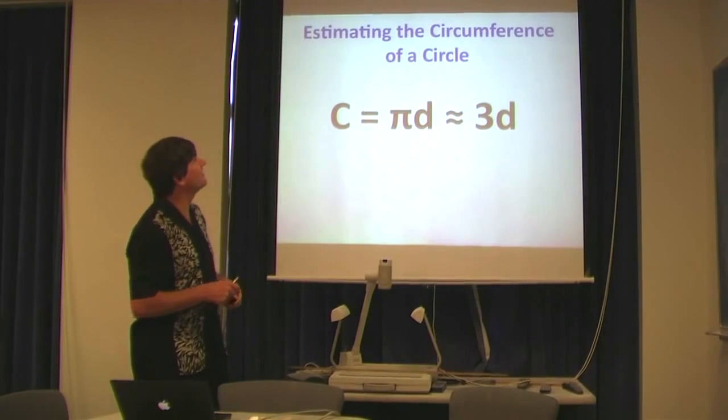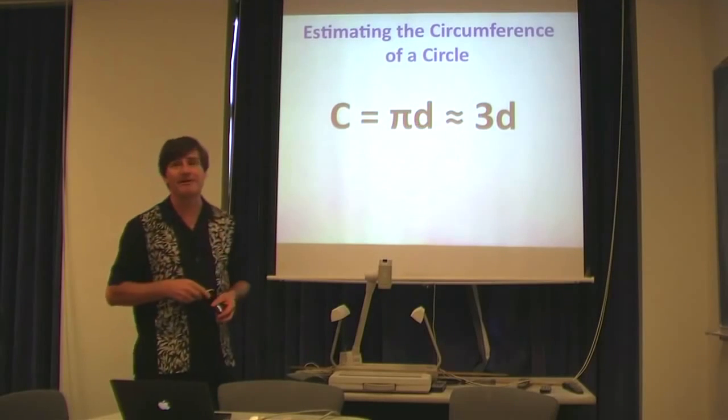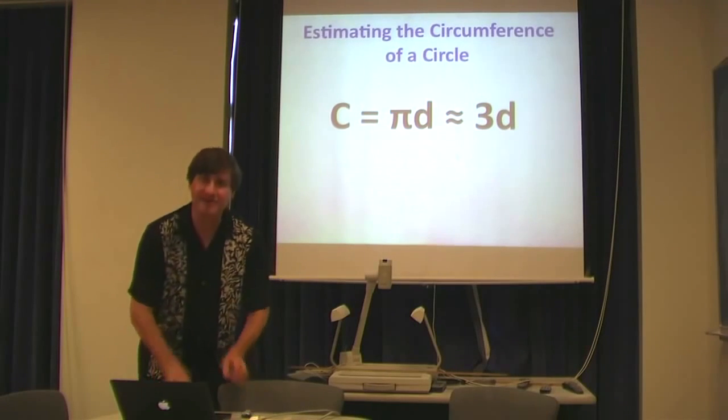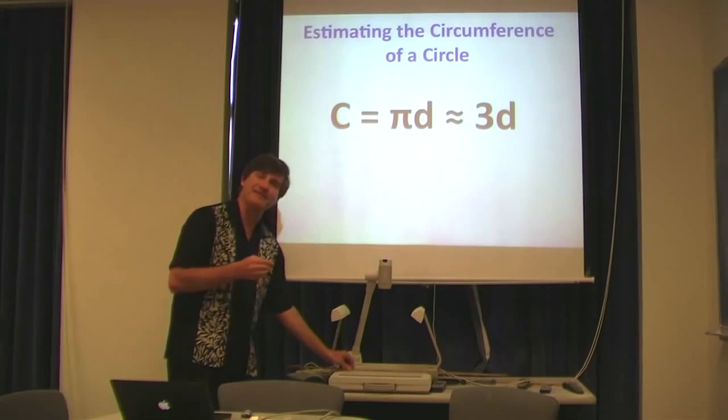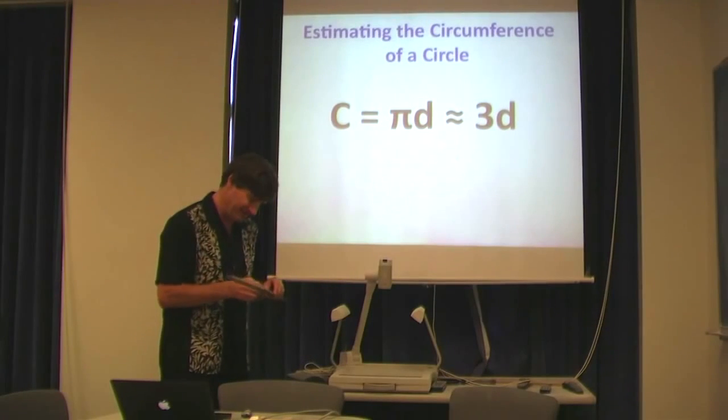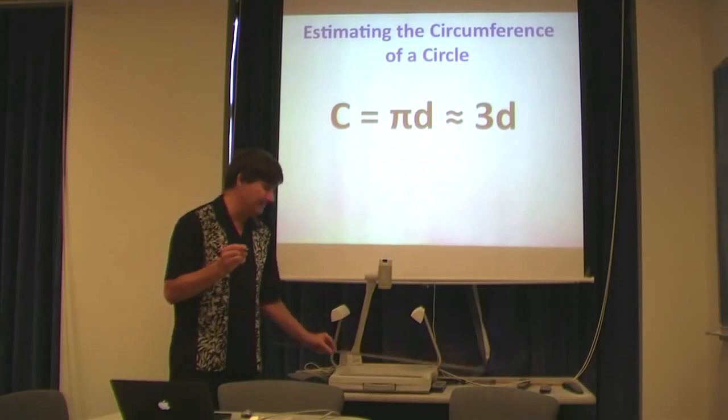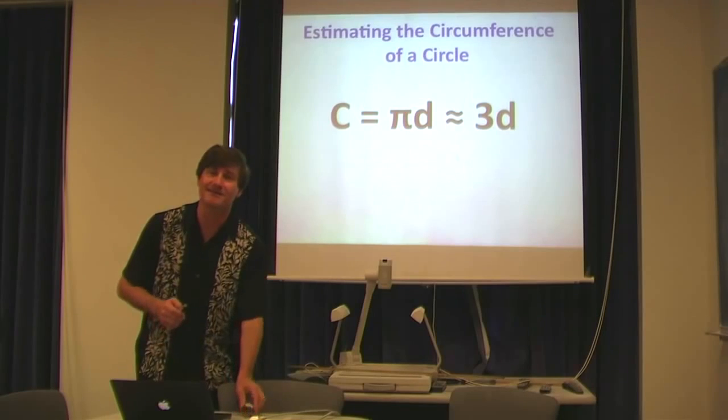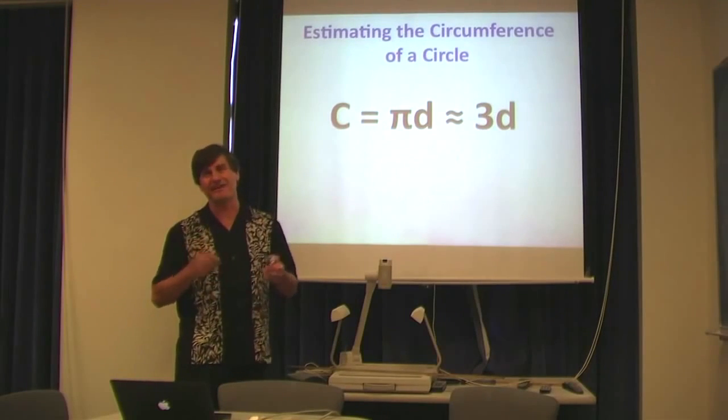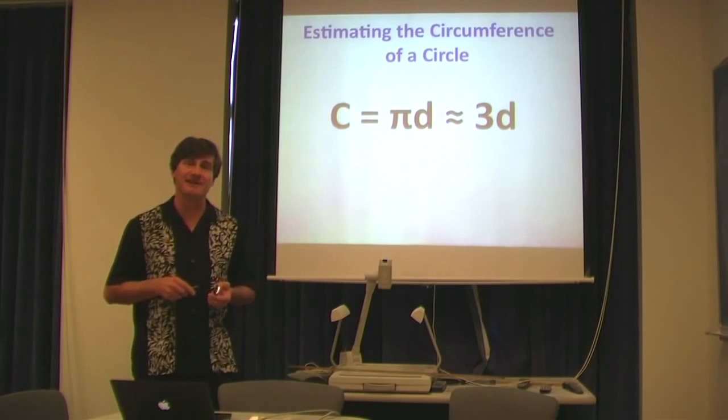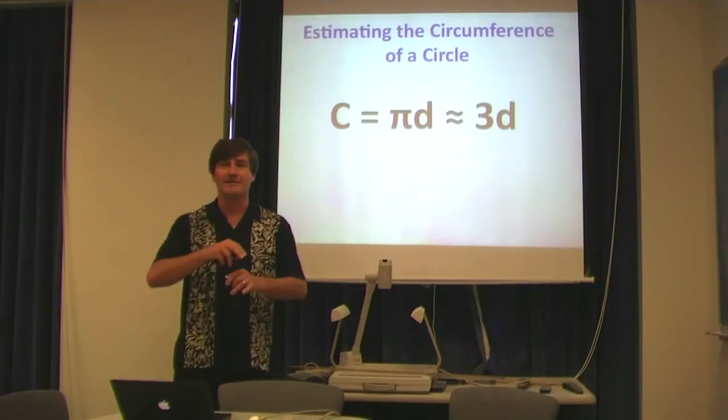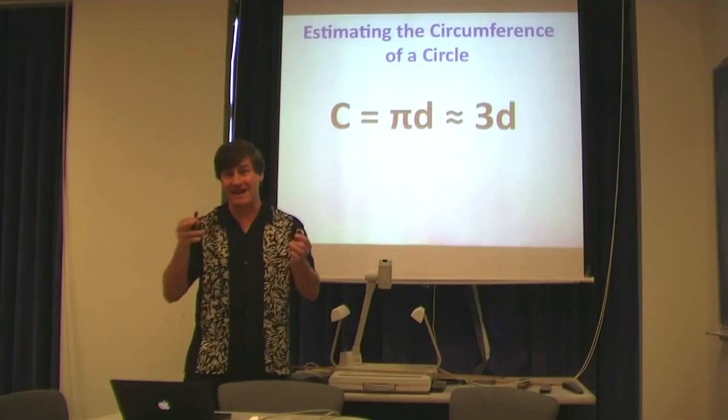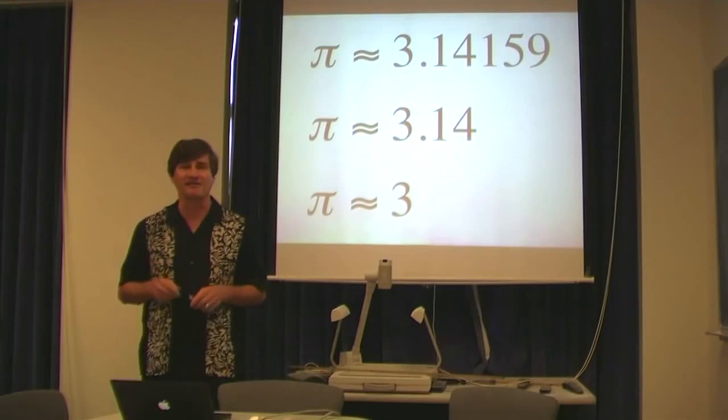You can easily estimate the circumference of a circle, pi times the diameter, by simply saying that pi is roughly 3. So, for example, if I take this nickel, and it turns out the diameter of the nickel is just a tad over 2 centimeters, just a little bit over 2 centimeters. Well, the circumference, the distance around, is roughly 3 times 2 or 6 centimeters, actually a tad over 6 centimeters, and that's the circumference of the nickel. So, the circumference of a bicycle wheel or a plate or anything circular can be estimated by multiplying its diameter by 3, which is a rough approximation of pi.